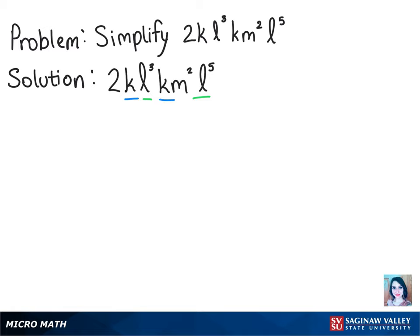When multiplying with same bases, we add the exponents. So we have 2 times k to the 1 plus 1 power times l to the 3 plus 5 power times m squared.